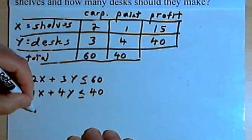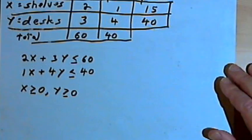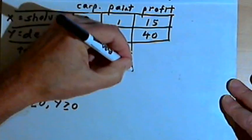Let's also remember that they can't make a negative number of shelves or a negative number of desks. So that means x has to be greater than or equal to 0, and y has to be greater than or equal to 0. So when we make a graph, the graph is going to be just in the first quadrant. So let's draw a rough graph.